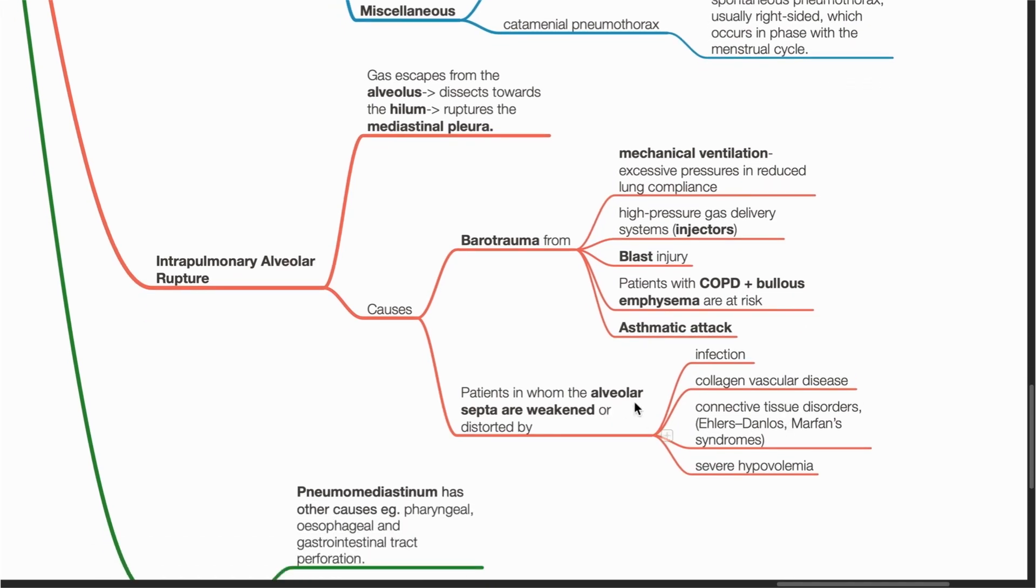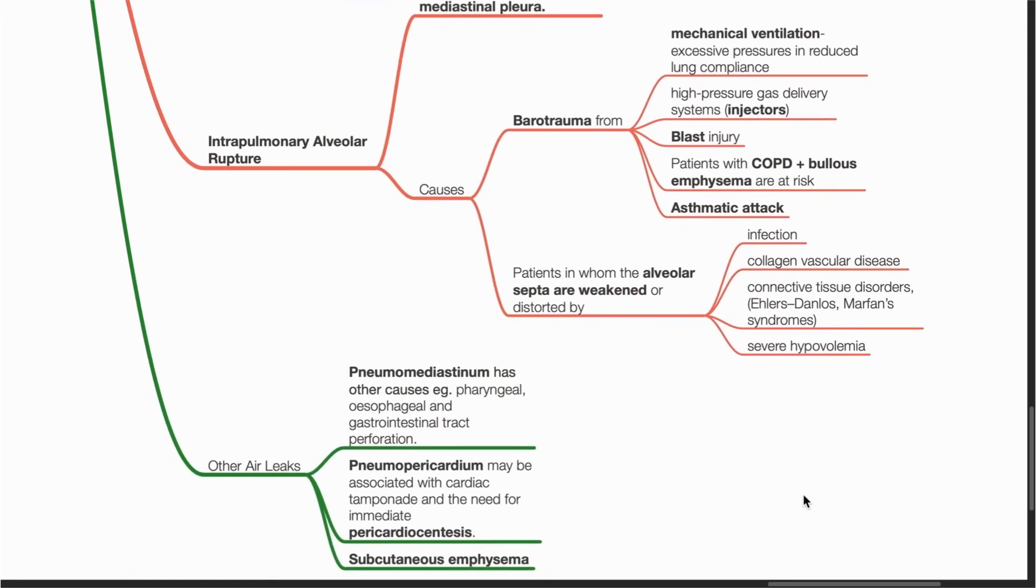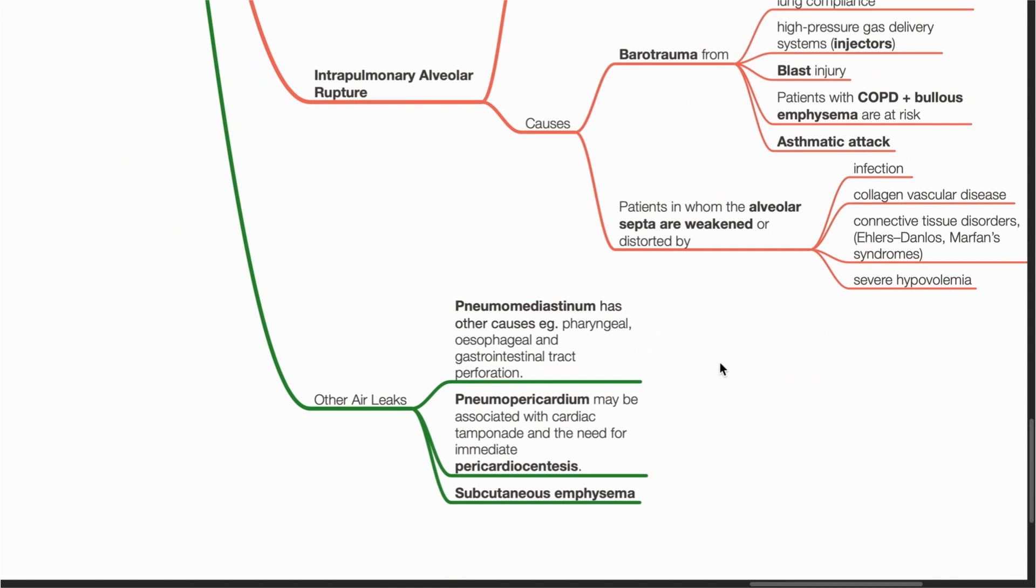Patients in whom the alveolar septa are weakened by infection, collagen vascular diseases, connective tissue disorders, or severe hypovolemia are also at risk. Other air leaks include pneumomediastinum, pneumopericardium, or subcutaneous emphysema.